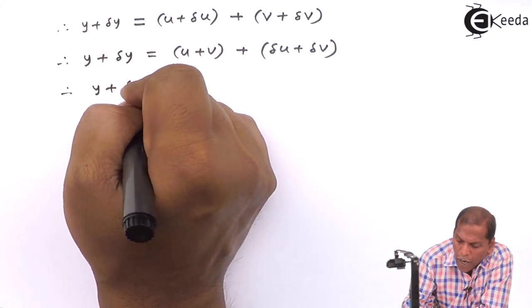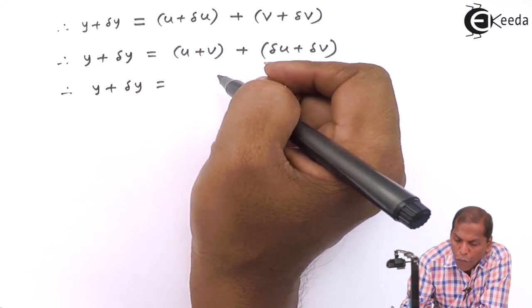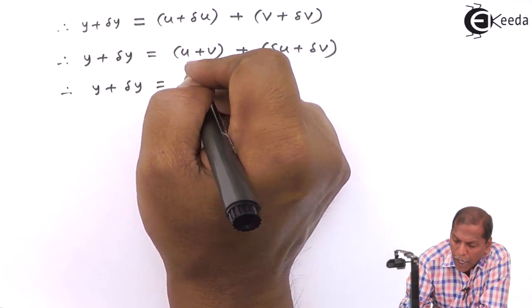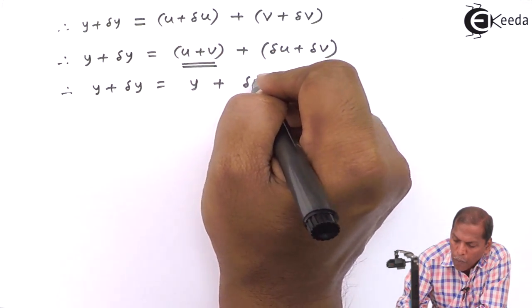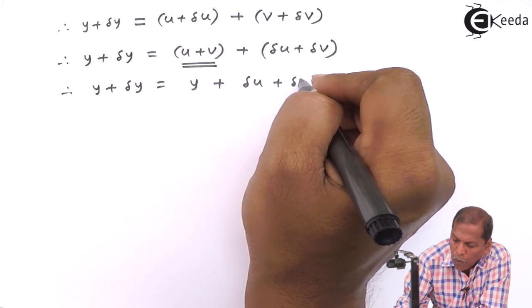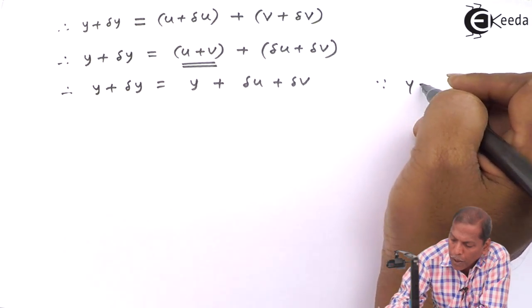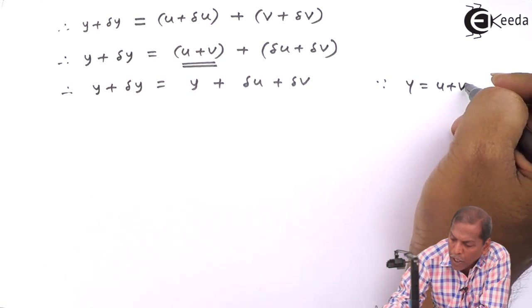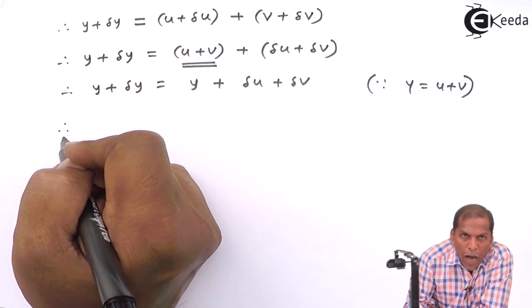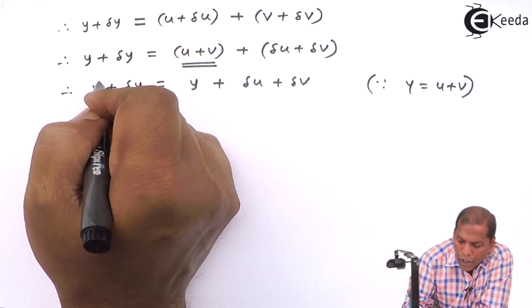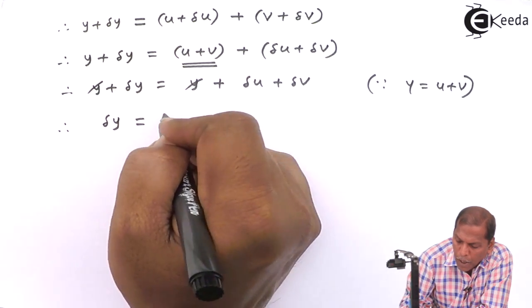Since u + v = y, we can write y + Δy = y + Δu + Δv. Now we cancel y from both sides, so we get Δy = Δu + Δv.